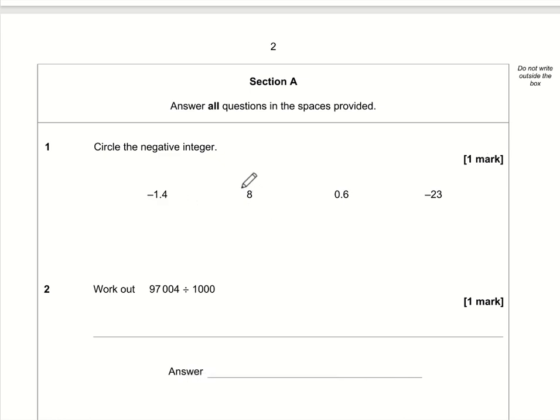We can spot straight away that it can't be 8 or 0.6 because they're both positive. But it does say the negative integer singular, not plural, so we can only circle one. It's all about understanding what an integer is - an integer is a whole number, in other words not a decimal. So it's not the -1.4, it's -23.